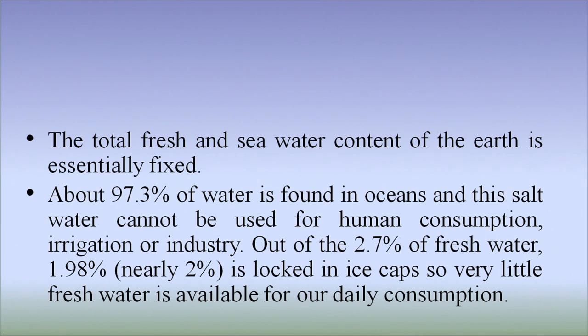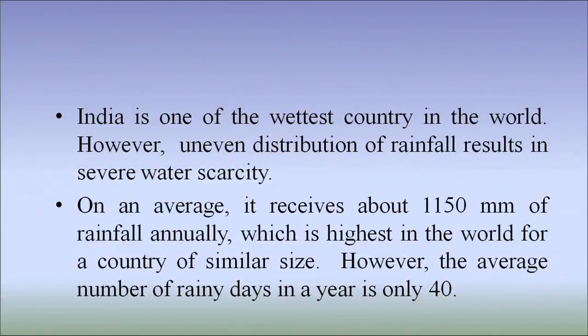Total fresh water and sea water of the earth is essentially fixed. About 97.3% of water is found in oceans and this salt water cannot be used for human consumption, irrigation or industries. Out of the 2.7% of fresh water, 1.98% — that is nearly 2% — is locked in ice caps. So very little fresh water is available for our daily consumption. India is one of the wettest countries in the world.